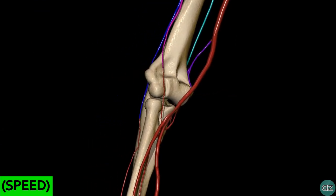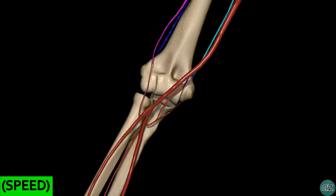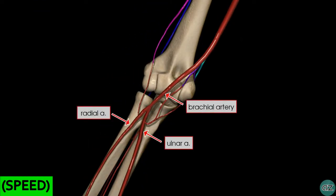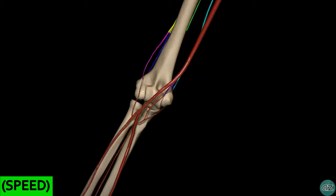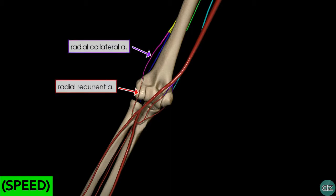As we saw before, the brachial artery terminates by dividing into the radial and ulnar arteries. The radial artery begins at the neck of the radius and passes laterally along the forearm. In this part of the tutorial we'll just look at the proximal branches of the radial and ulnar arteries, covering the distal branches in the next part on the hand and wrist. Proximally the radial artery has only one branch — the radial recurrent artery, which we just looked at anastomosing with the radial collateral artery.